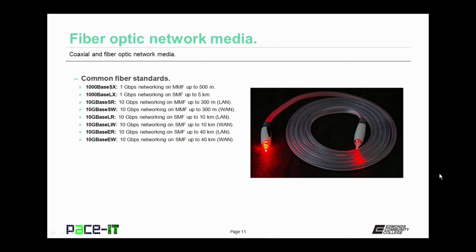Something to keep in mind: if the standard has an S in it — as in SX, SR, SW — those are multi-mode fiber; the S stands for short. If it has an L in it — as in LX, LR, LW — that's single mode fiber of up to 10 kilometers. And if it has an E in it — ER, EW — that stands for extended, and that's single mode fiber of up to 40 kilometers.